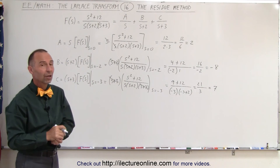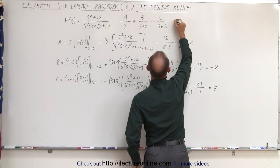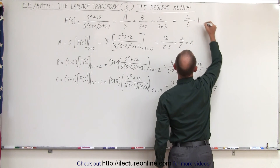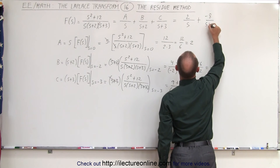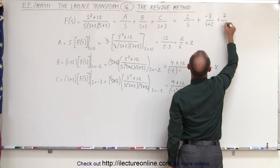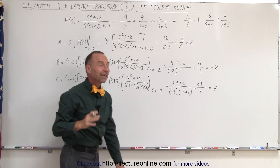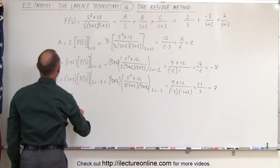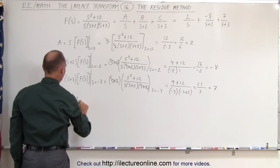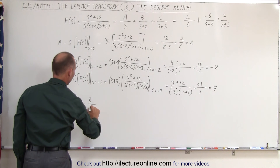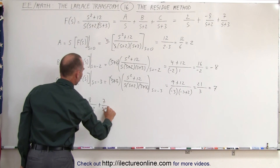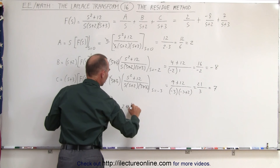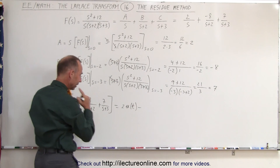Notice how we can get the same results using what we call the residue method, which means that this function in the frequency domain can be written as A — which is 2 — over s, plus B — which is minus 8 — over s plus 2, plus 7 over s plus 3. So the full partial fraction expansion is 2/s minus 8/(s+2) plus 7/(s+3).